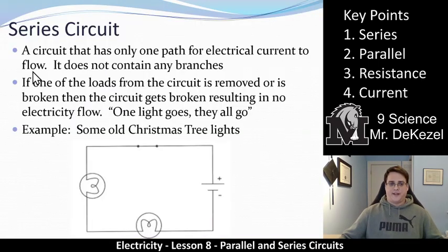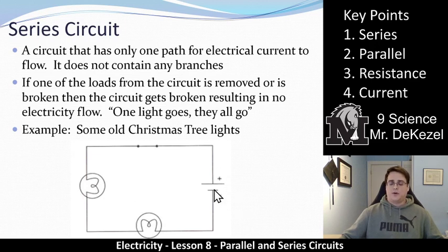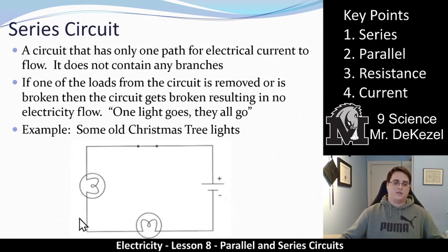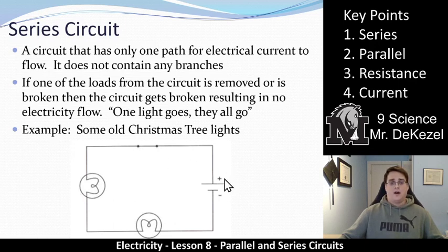A series circuit is a circuit that has only one path for electrical current to flow, which means it does not create or contain any branches. So in this one right here, we have the electrons starting here. They would flow down this wire, through this load, through this load, through this switch — which is closed, meaning the circuit is good to go — and to the positive side of the battery. There is nowhere else for the electrons to go; they just go in a circle.